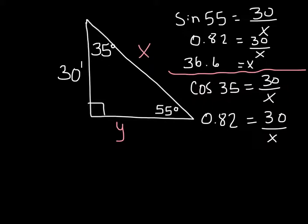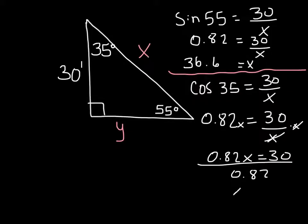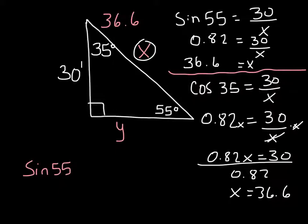So, just in case the algebra there messed with you, this is what I did. I multiplied both sides by x. These x's canceled. So then I had 0.82x equaling 30. And divided both sides by 0.82. So x comes out to 36.6. So now up here, I know that this x right here is 36.6. And I did it two different ways. So this means that the sine of 55 must be the same thing, must be congruent to the cosine of 35. So that's an interesting thing that we just discovered. It's very interesting.